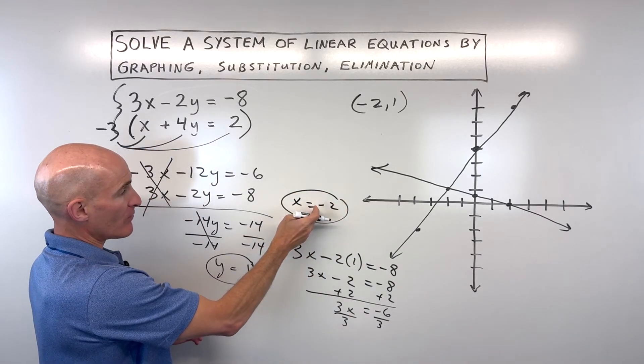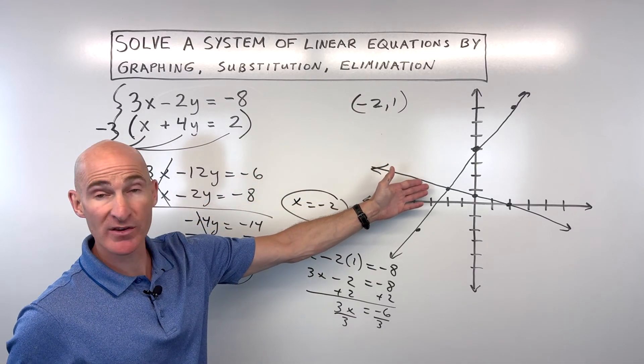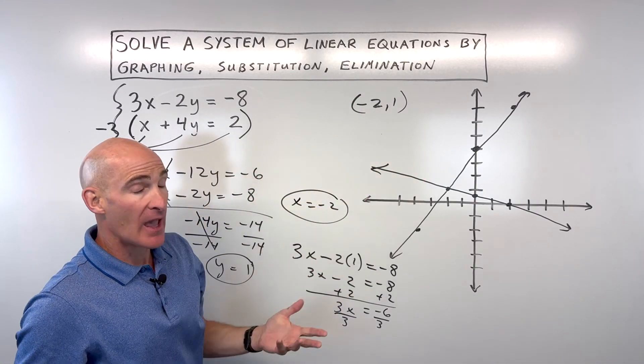And so, now we have our point of intersection, negative 2, comma 1, the same as we got in the substitution method, as well as in the graphing method. And you solved it.